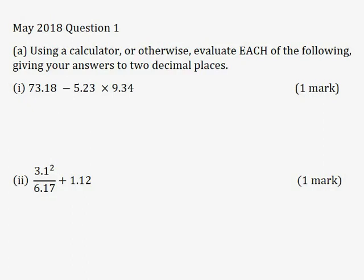Part 1: 73.18 minus 5.23 multiplied by 9.34, for one mark. I'm going to type this expression into my calculator and press equal, and I'm getting a value of 24.3318.